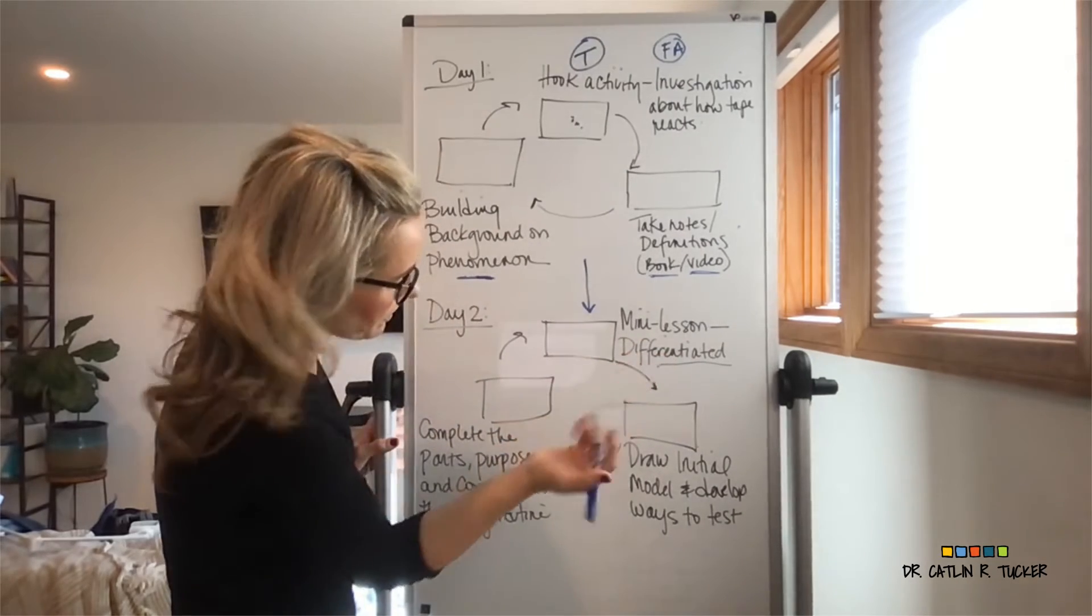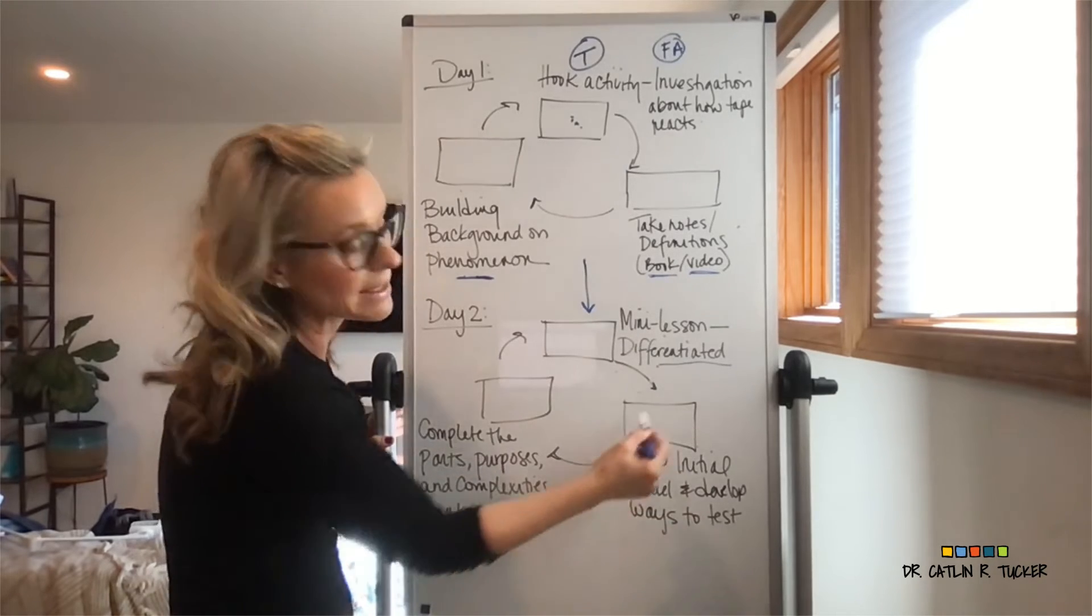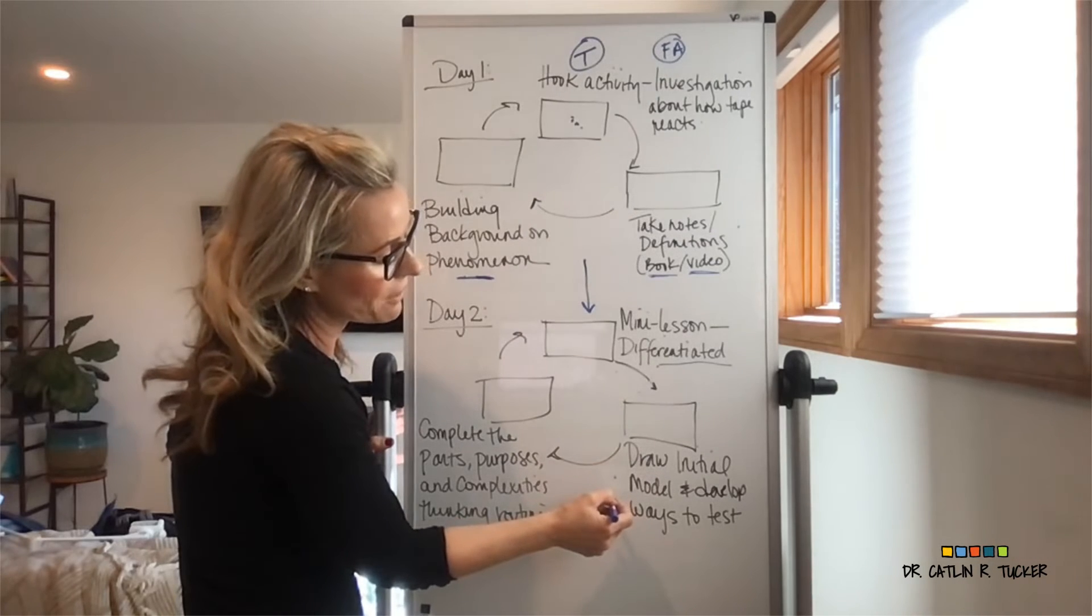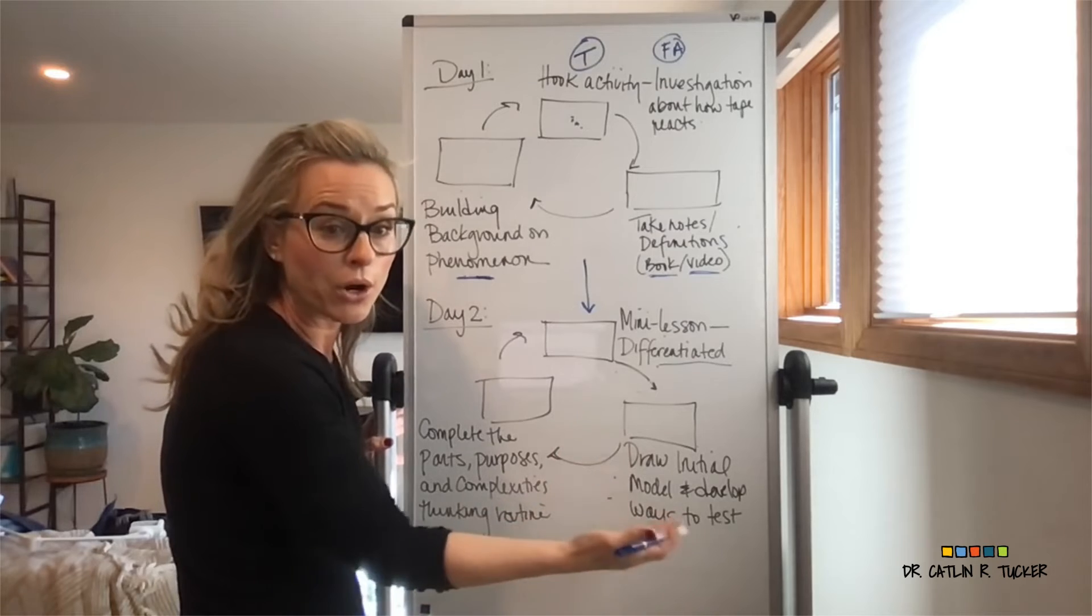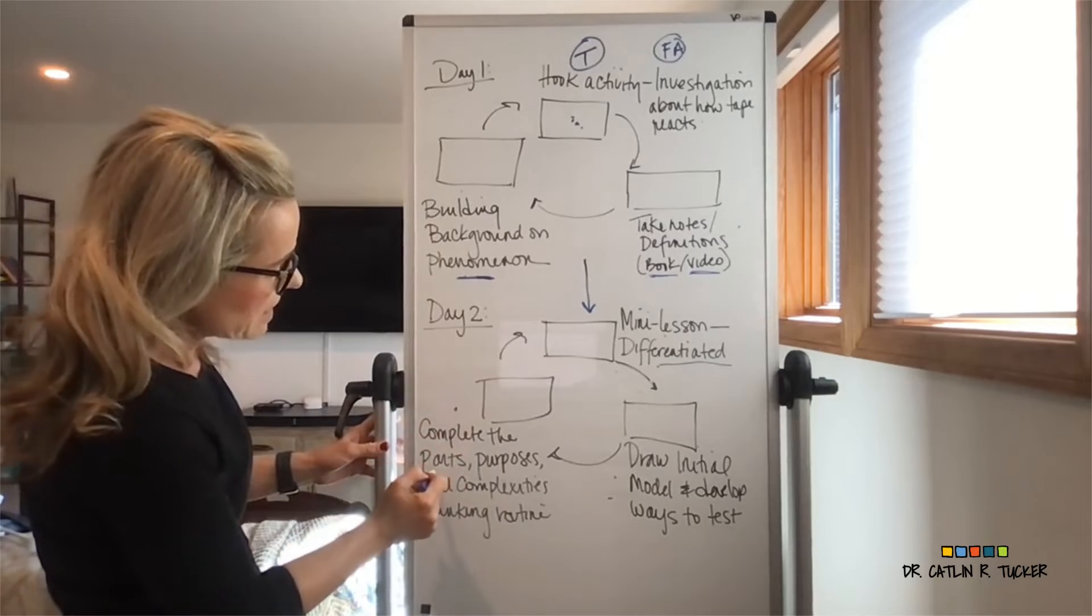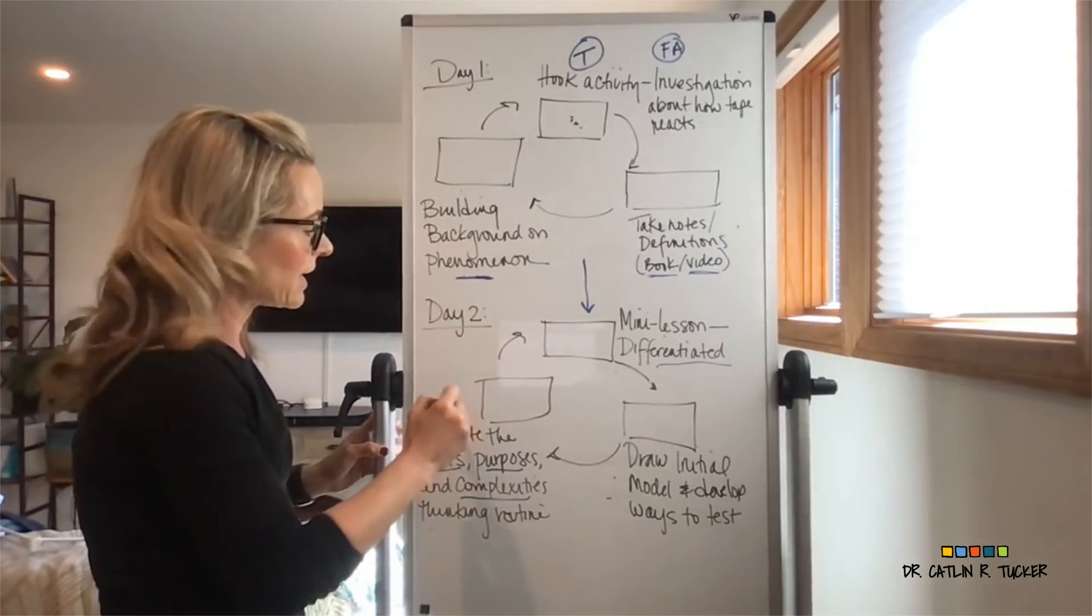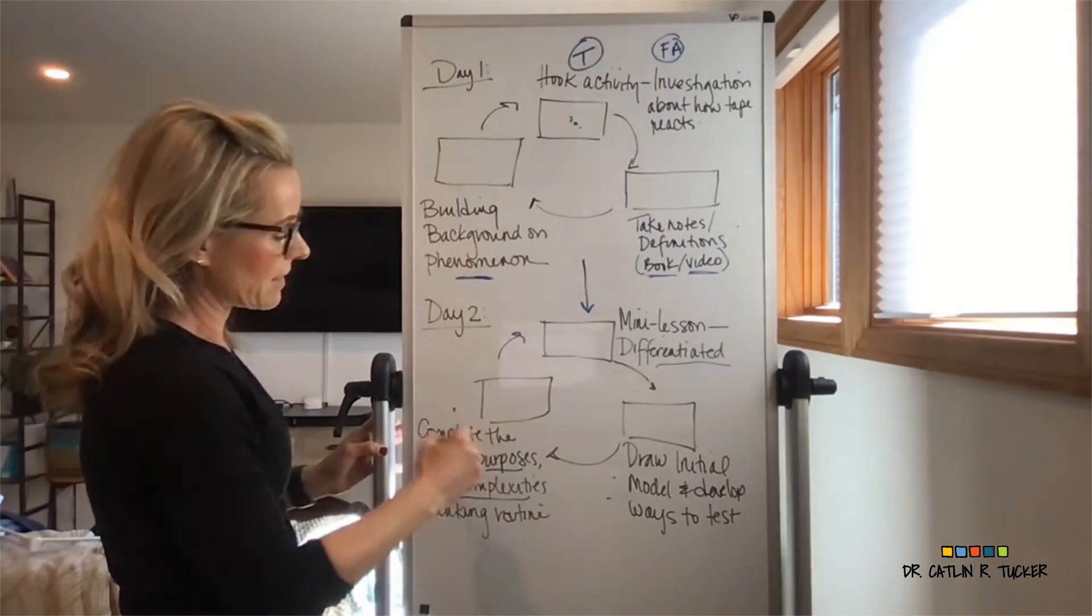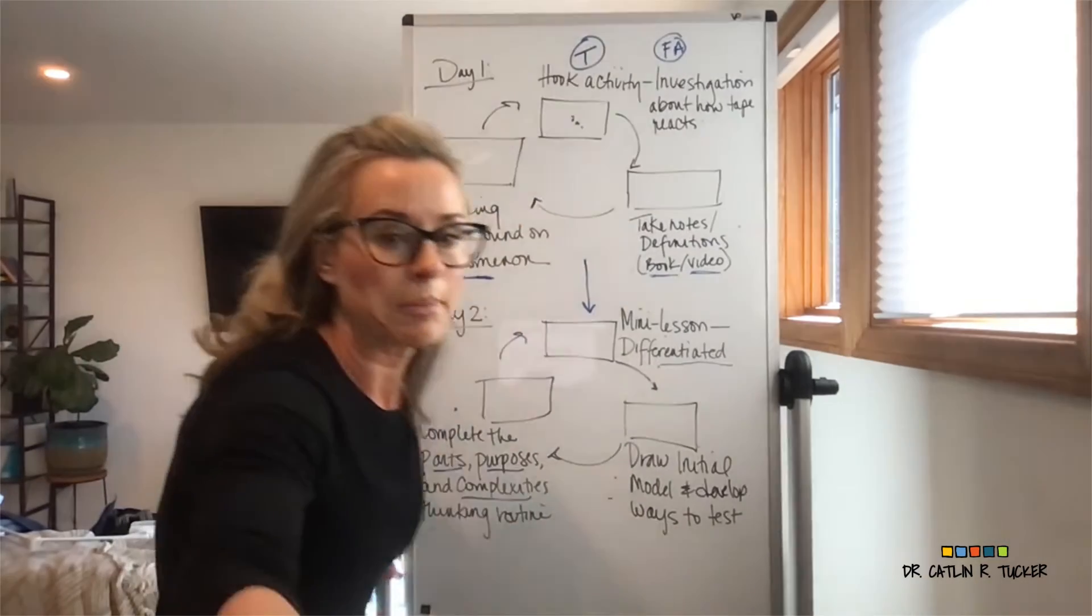Down here we have them drawing their initial model and developing ways that they might test that model. This is a wonderful opportunity for some agency around 'Do you want to do this on your own? Do you want a partner to do this with you?' Have some peer support. And then over here it says complete the Parts Purposes and Complexities thinking routine, again getting them revisiting their notes from the hook activity the day before, getting them thinking more deeply about that activity.